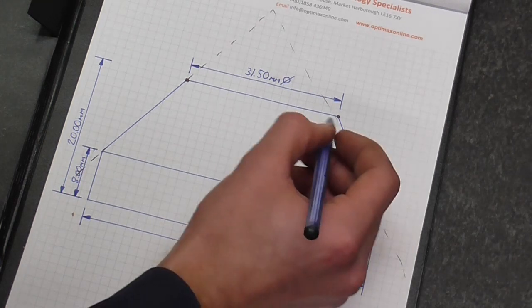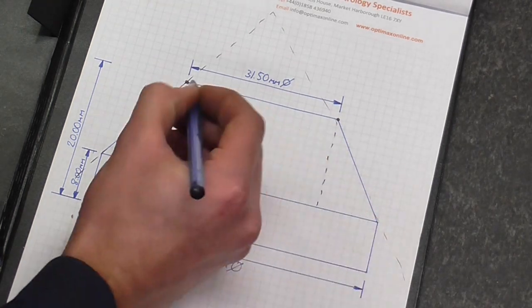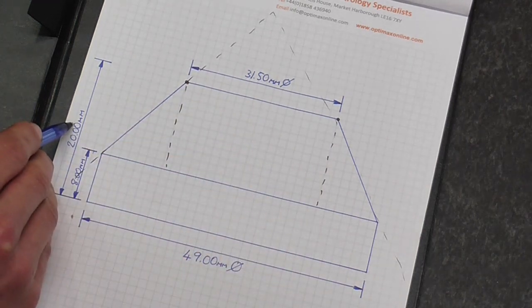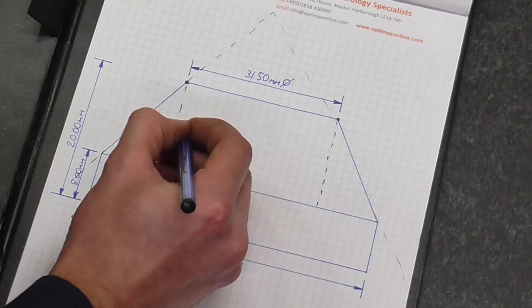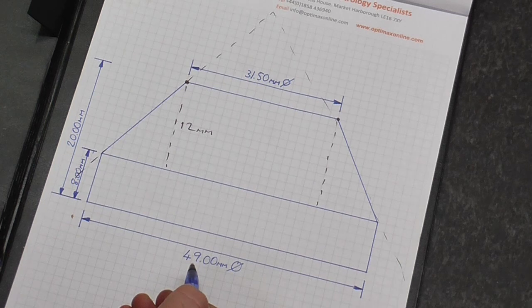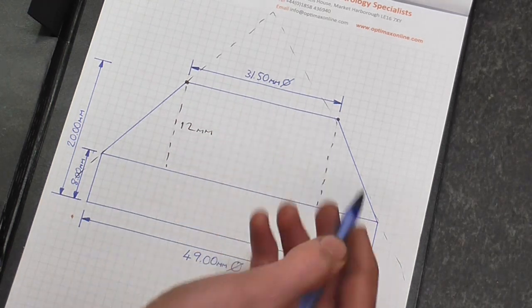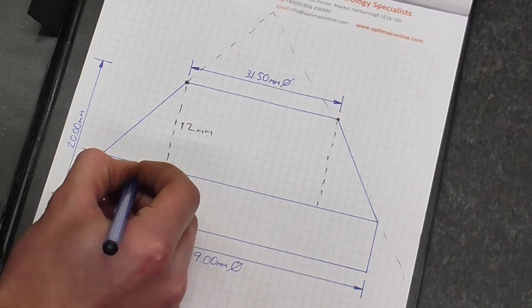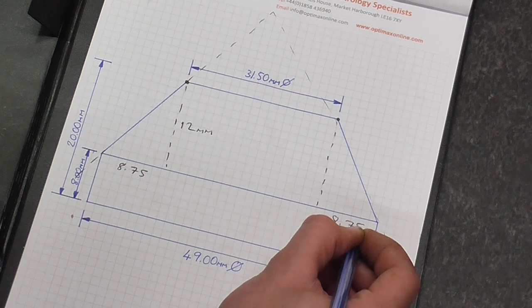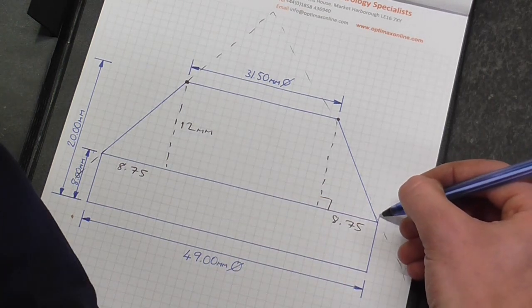We can then give ourselves some other information. We need an angle and you've basically got a triangle here and a triangle here. 20 millimeters minus 8 millimeters gives you 12 millimeters there, and 49 millimeters minus 31.5 divided by 2 gives you 8.75 on each side. If you do the SOH CAH TOA on this you actually get an angle.